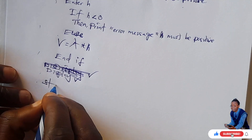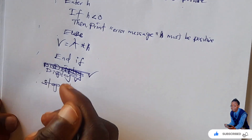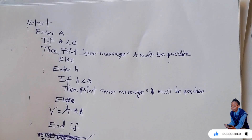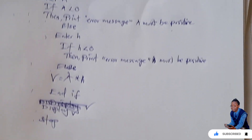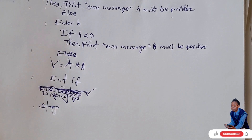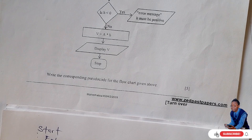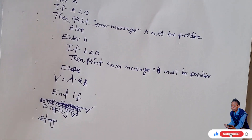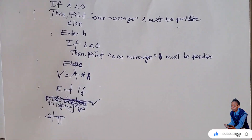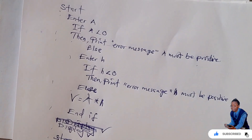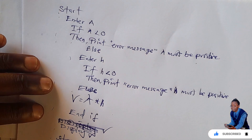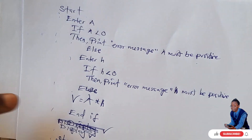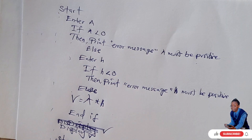After doing everything you stop, and it is just five marks — that's how this is done. Now sometimes you may be given this program and asked to come up with a flowchart, and it is very simple. Coming up with a flowchart from this program is very straightforward — start is a symbol for start.